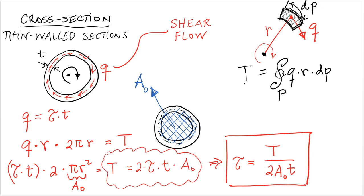From there we can solve for tau and say that the shear stress along the wall thickness is equal to T, the torsional moment, divided by 2A₀ times thickness. And we get this nice expression here that is probably familiar to you from mechanics of materials.